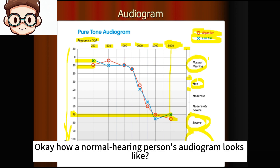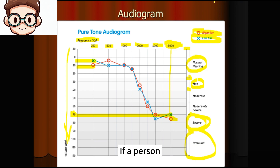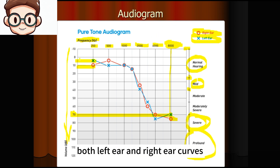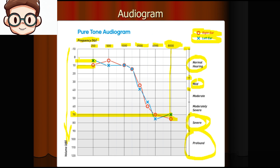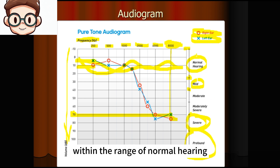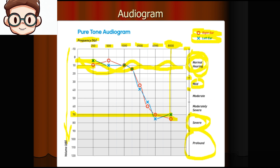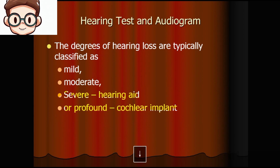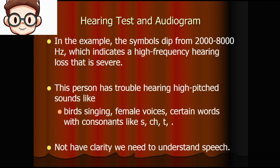How does a normal hearing person's audiogram look? If a person has normal hearing, both the left ear and right ear curves are within the range of normal hearing. That is a normal hearing audiogram.